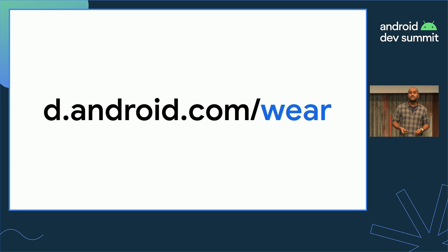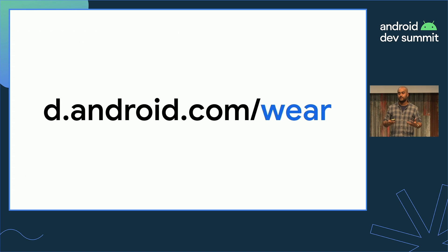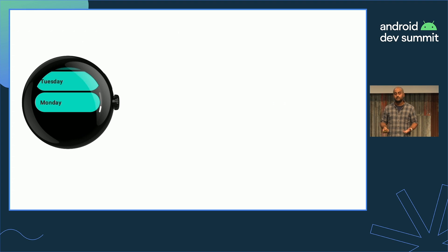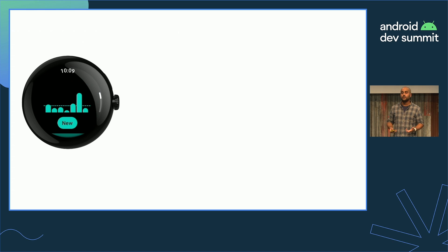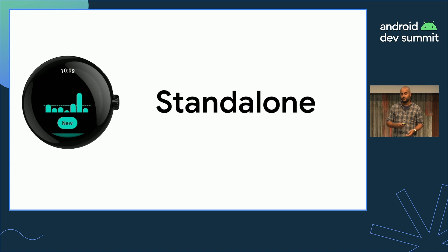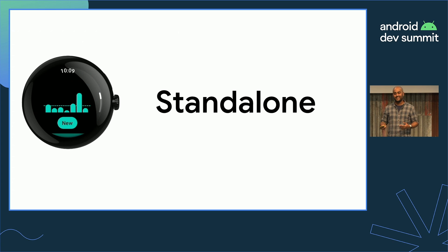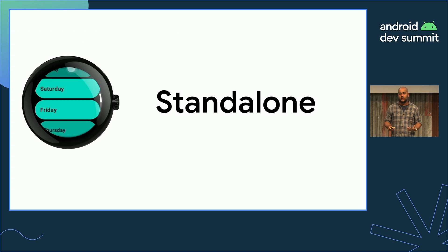We learned from case studies on developer.android.com that other companies had success increasing engagement with their products by adding a Wear app, so that's the reason we're interested in building one for ourselves. We want it to work on its own — our users shouldn't have to take their phone with them when they go to the gym or for a run unless they want to. This means the app should be standalone, syncing activities with our backend directly, without needing the mobile app installed.